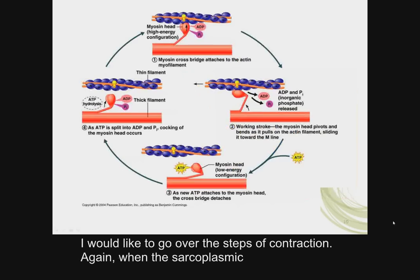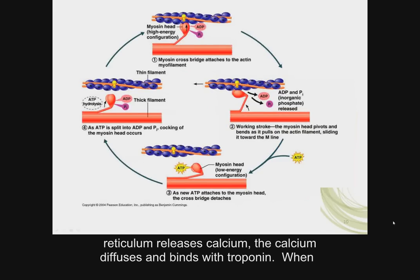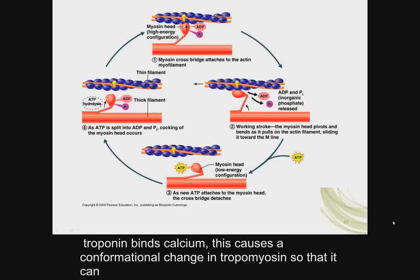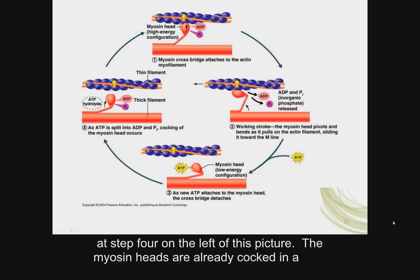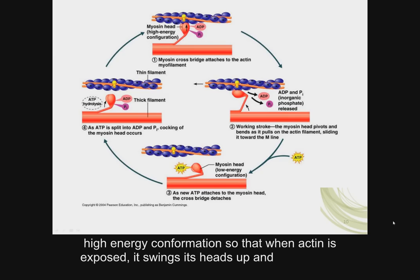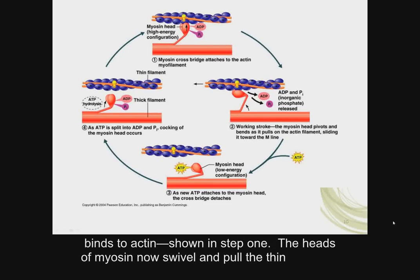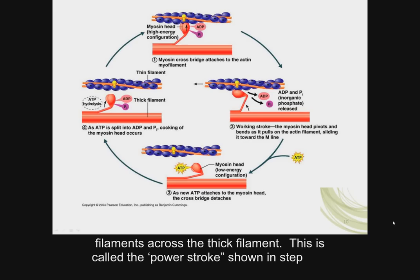Let's go over the steps of contraction again. When the sarcoplasmic reticulum releases calcium, the calcium diffuses and binds with troponin. When troponin binds calcium, this causes a conformational change in tropomyosin so that it can no longer block actin's binding sites for myosin crossbridges. Starting at step 4: the myosin heads are already cocked in a high-energy conformation so that when actin is exposed, they swing up and bind to actin — shown in step 1. The heads of myosin then swivel and pull the thin filaments across the thick filament — this is called the power stroke, shown in step 2.